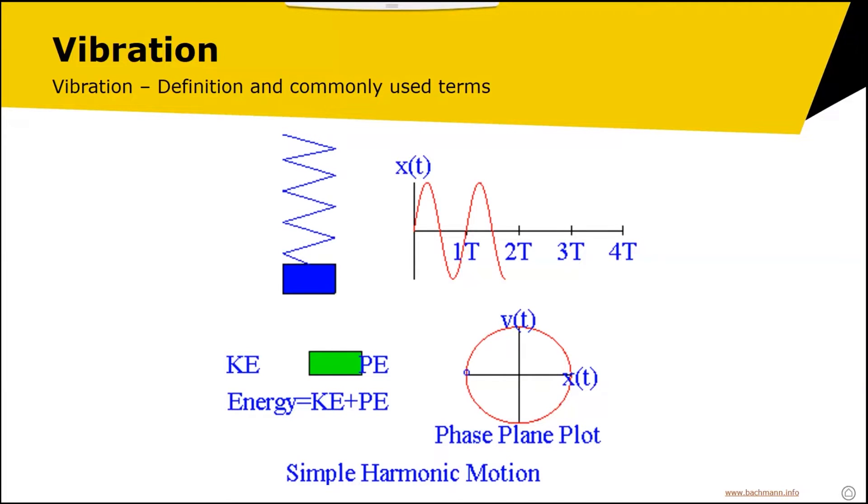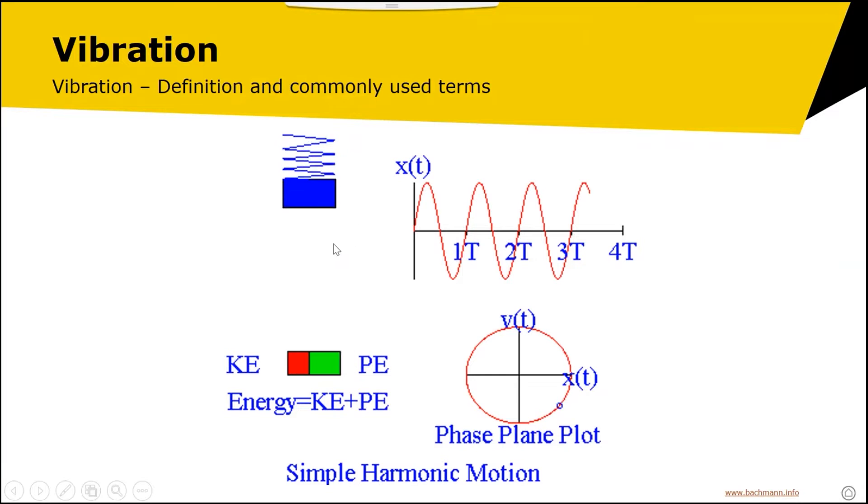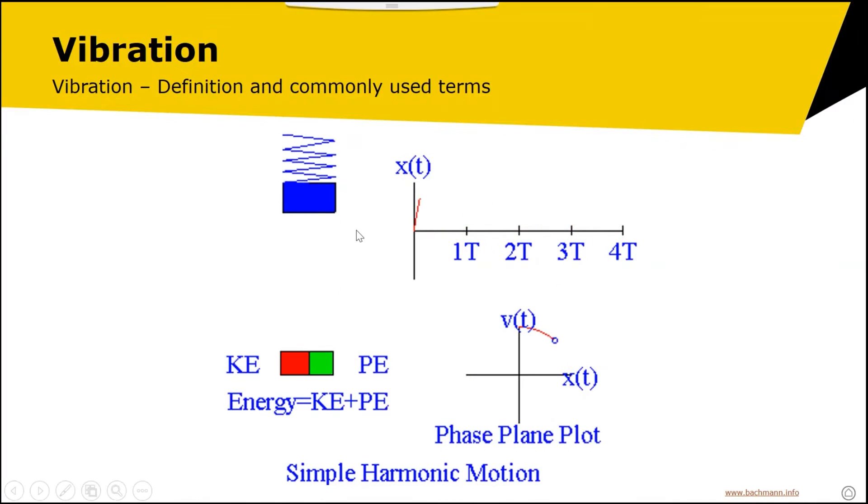Vibration: the definition of vibration is oscillation about an equilibrium point. What we have in this animation is a way of talking about some of the common terms. Here we have a simple mass-spring system that everyone is familiar with. The displacement is measured from the equilibrium point, so that's the middle. The displacement here is plotted as x, and time on the x-axis.